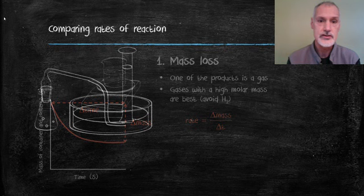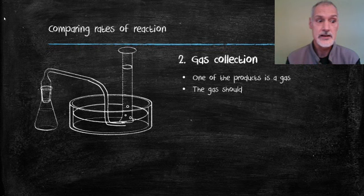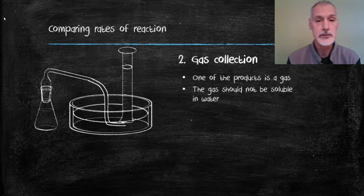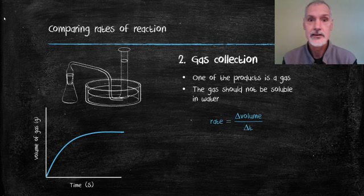We can also measure in a gas situation to collect the volume of gas by bubbling it through water and collecting it in the graduated cylinder as shown here. For this technique to work we want to make sure that the gas isn't soluble in water. We can then measure the volume with respect to time and generate a graph, and then again we can measure the rate by looking at the change in the volume of gas versus time.